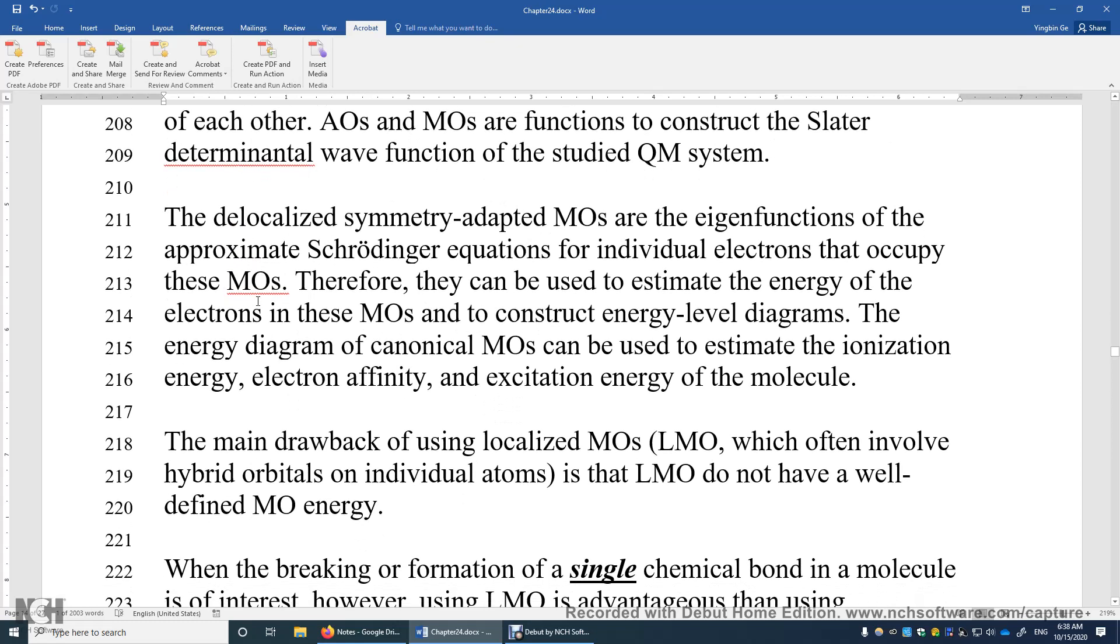Now let's further compare the delocalized symmetry-adapted MOs and the localized MOs. The delocalized symmetry-adapted MOs are the eigenfunctions of the approximate Schrödinger equation for individual electrons that occupy this MO. So it's possible to determine the MO energies and the total energy of the molecule at the same time.